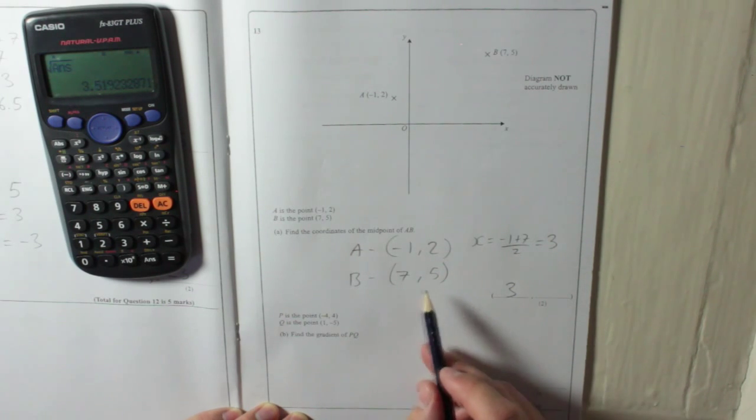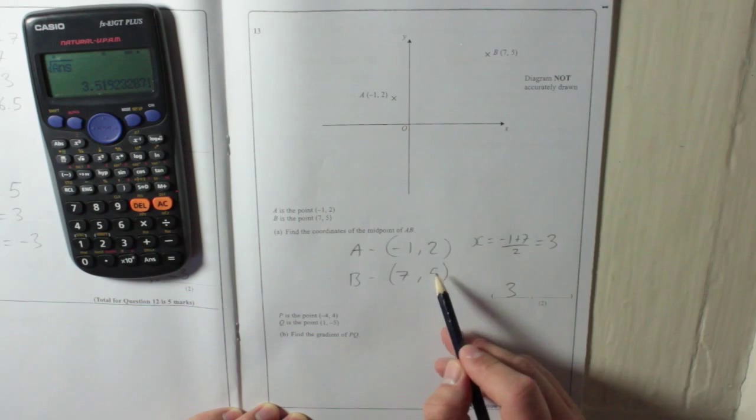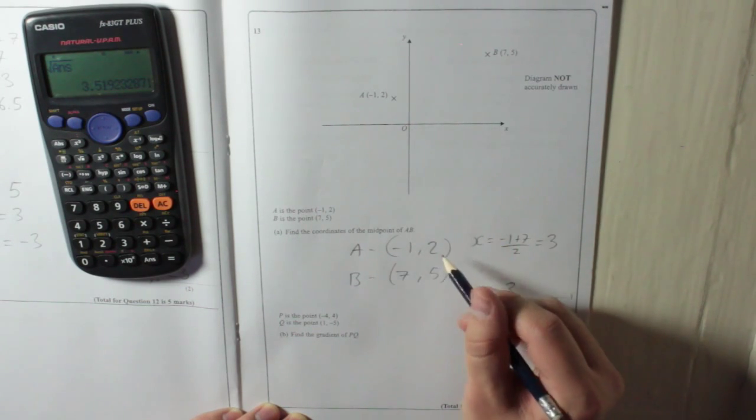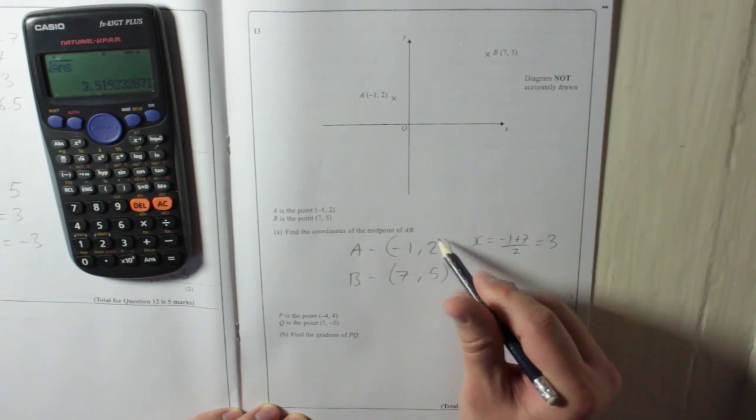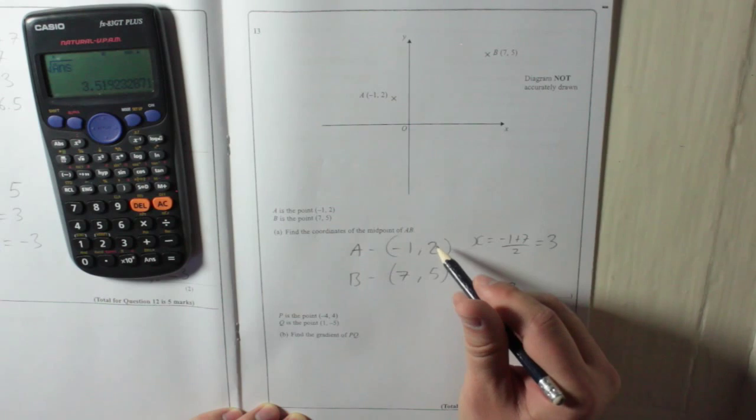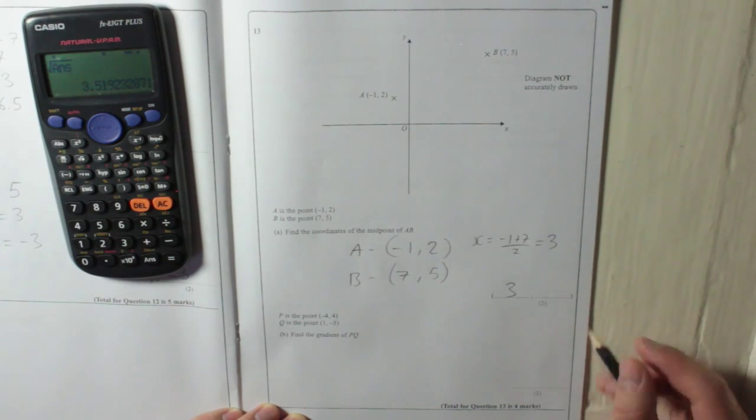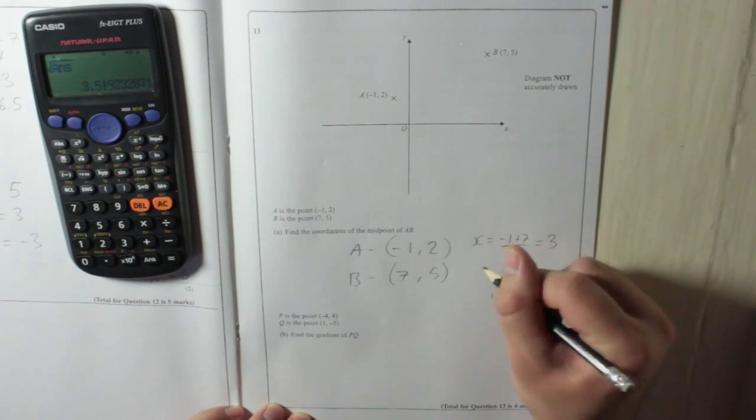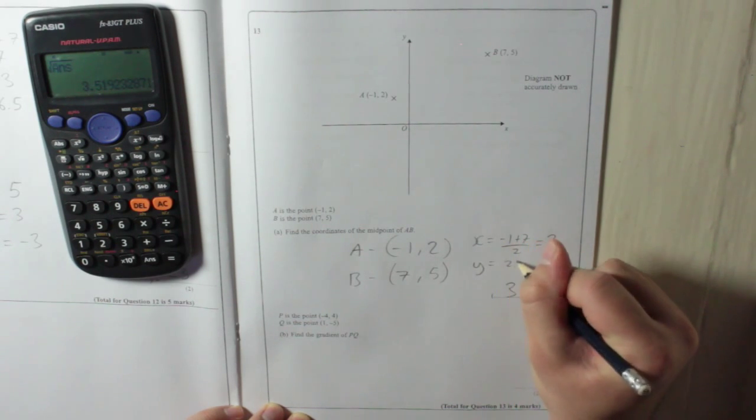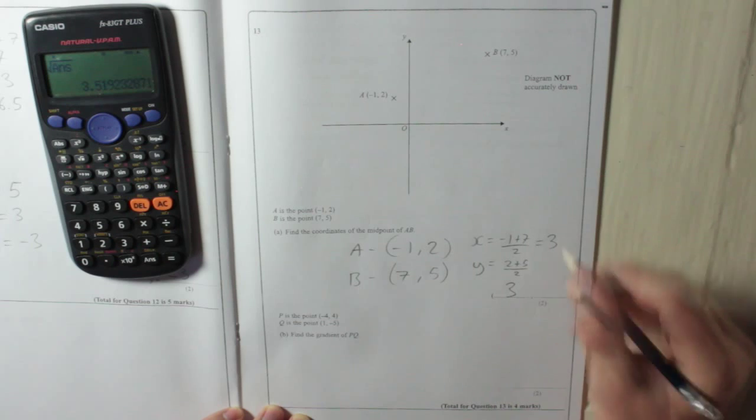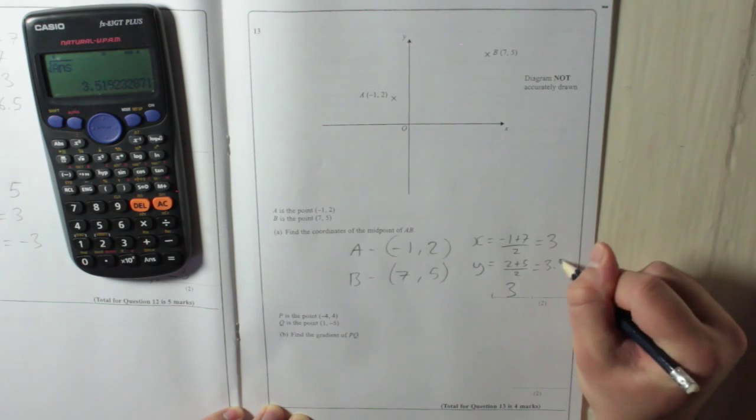And then the y is in between the 2 and the 5, which maybe is a bit harder because from 2 to 5 is 3 places. So half of 3 is 1.5. So you'd have to add 1.5 to 2, which is 3.5. But you can still do it the other way. You can take the y-coordinates. You can do 2 plus 5, divide by 2. So 2 plus 5 is 7. Divide by 2 is 3.5.